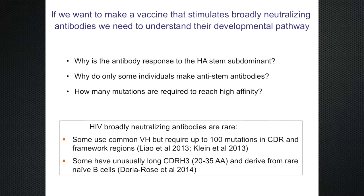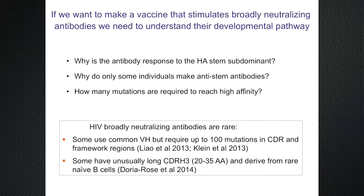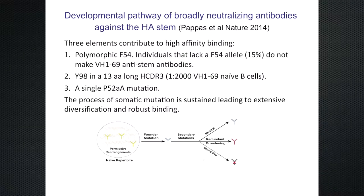If you want to make a vaccine based on this concept, you have to understand how you generate these broadly neutralizing antibodies. The interesting questions are: why is the antibody response to the stem of the hemagglutinin — the broadly influenza-neutralizing antibody — so rare? Only some individuals make it, and at very low titers. And how many mutations are required to make a high-affinity antibody? In HIV, colleagues' work suggests you may need up to 100 mutations, or you may need antibodies with unusual features such as a very long CDR3, which reflects a very rare precursor.